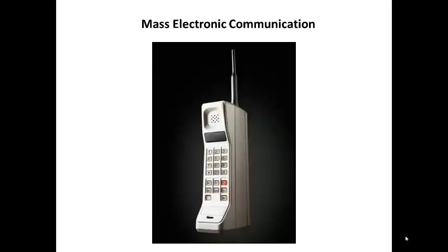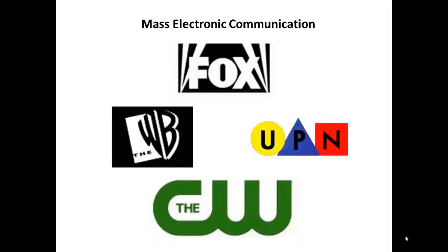In 1979, Japan developed the first cellular phone communication network. Those mobile phones were a lot bulkier than today's smartphones. In addition to more cable and satellite competition, more broadcast networks emerged. In 1986, the Fox broadcast TV network debuted. In 1995, the WB and UPN broadcast TV networks were launched. By 2006, the WB and UPN merged to form the CW broadcast TV network.